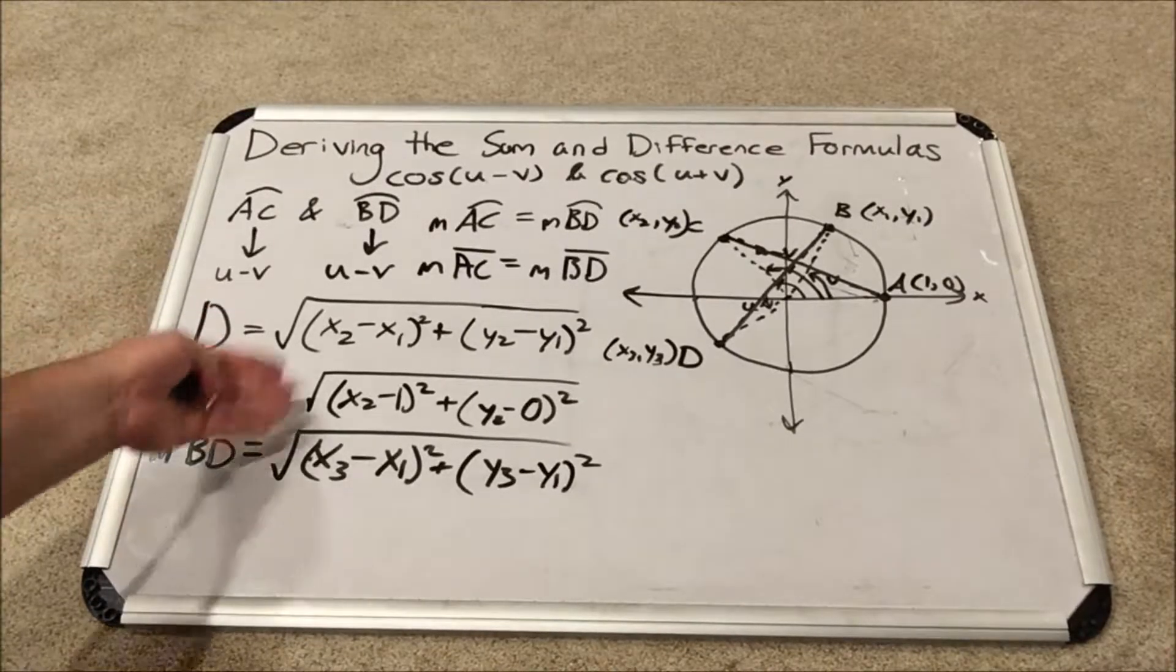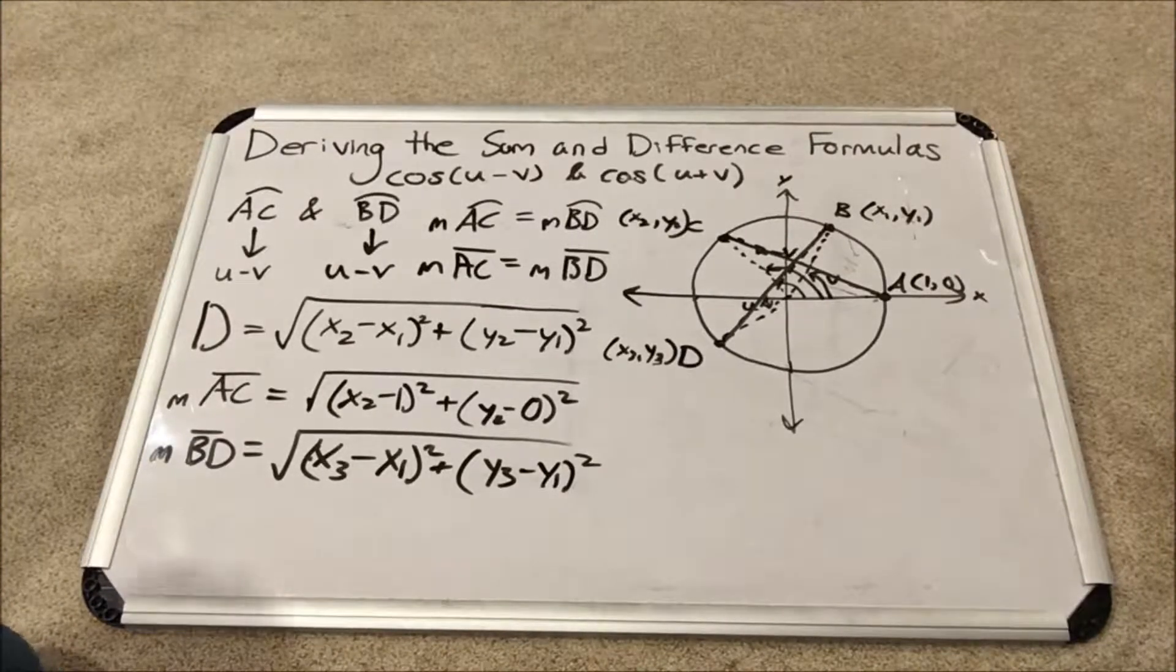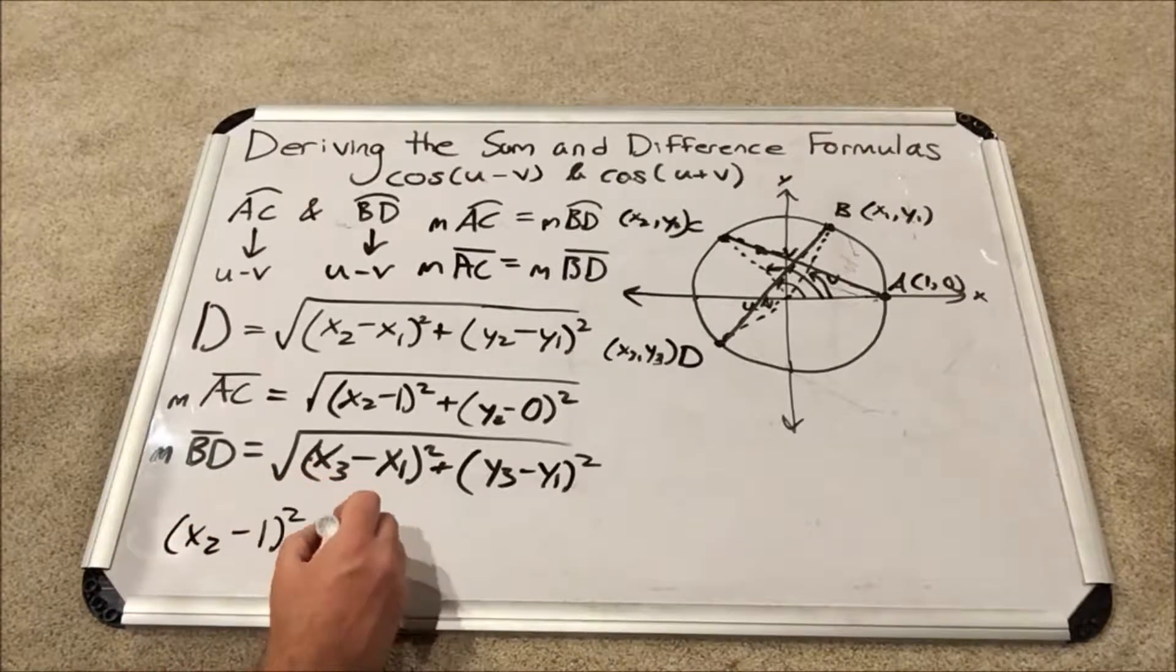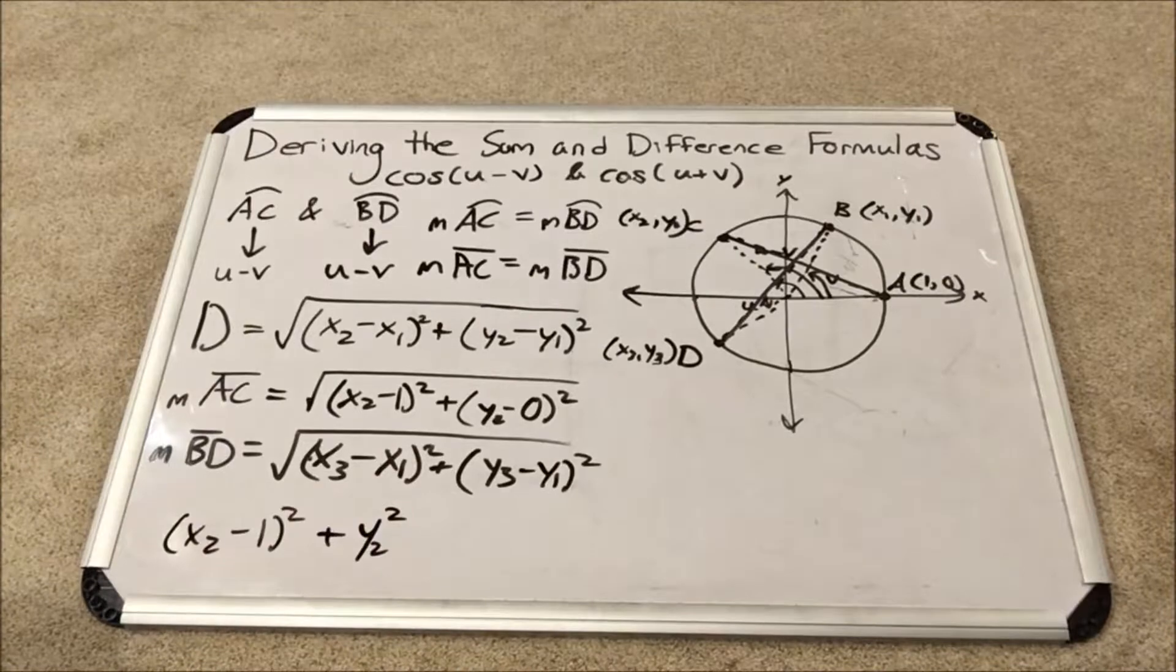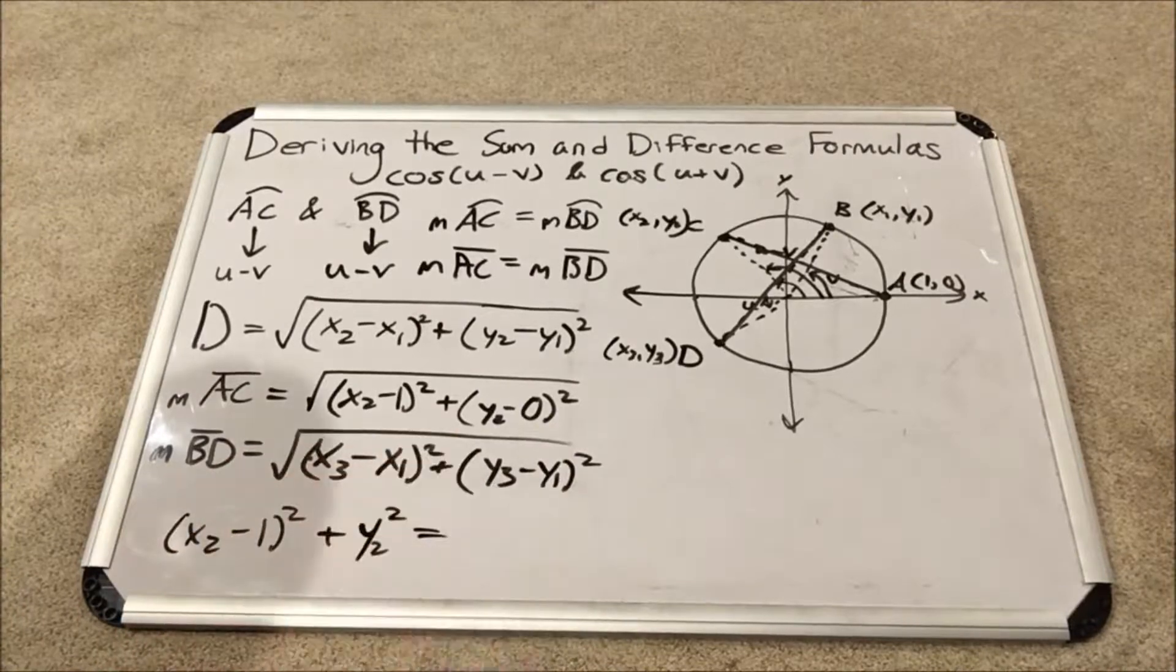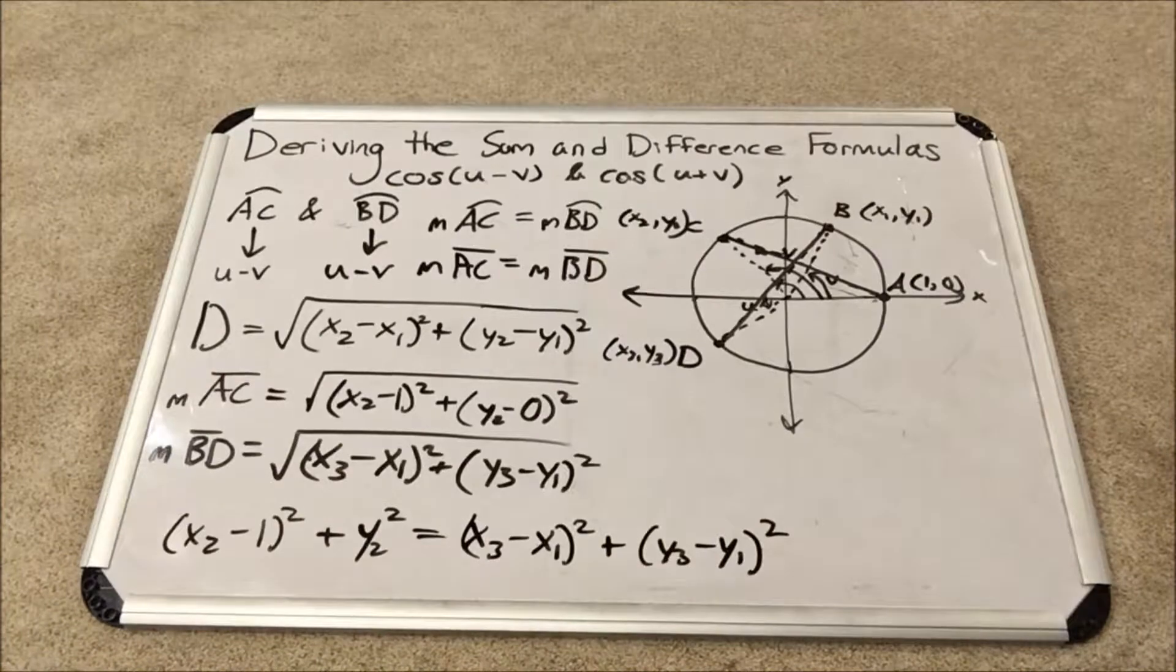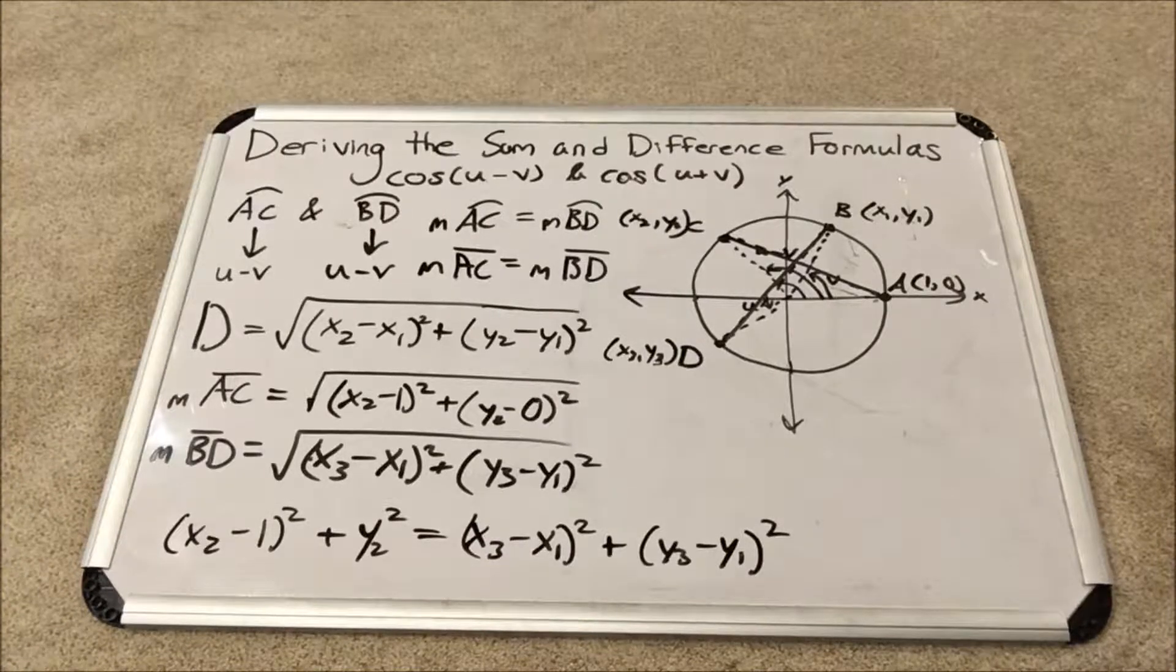But you know what's not nice are these square roots. So I'm going to set them equal to each other and when I do that, I'm going to square both sides so that the square roots are gone. This is totally valid. And so we have x2 minus 1 squared plus y2 squared equals x3 minus x1 squared plus y3 minus y1 squared. Now our final mode of attack is to simplify this equation and that's what we're going to do next.